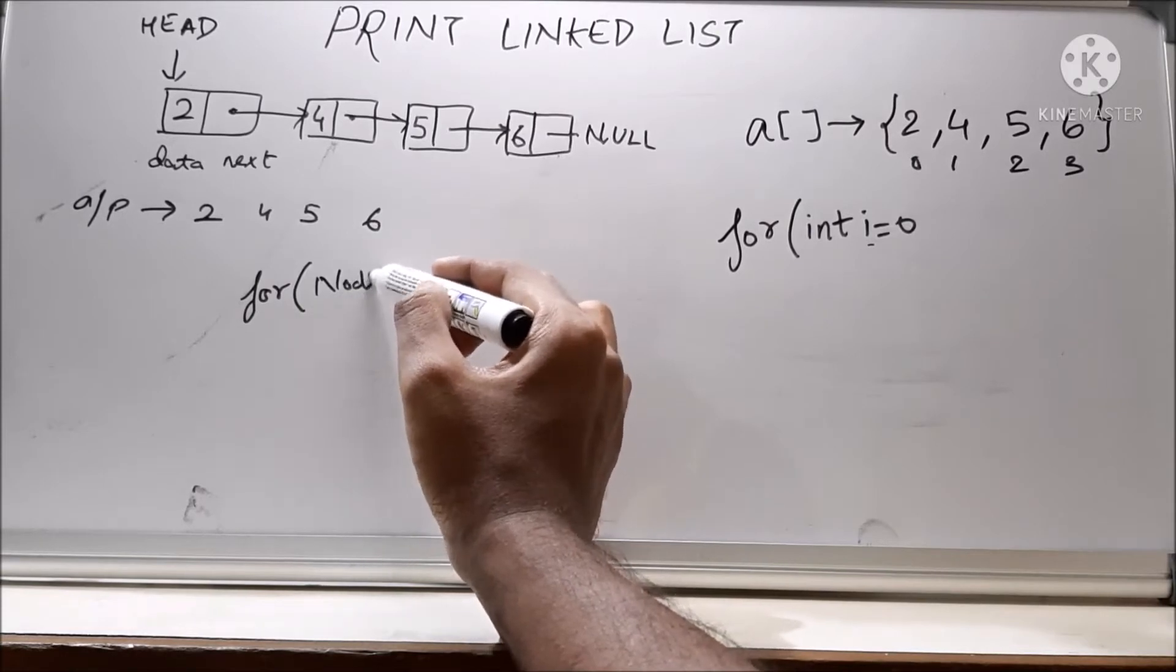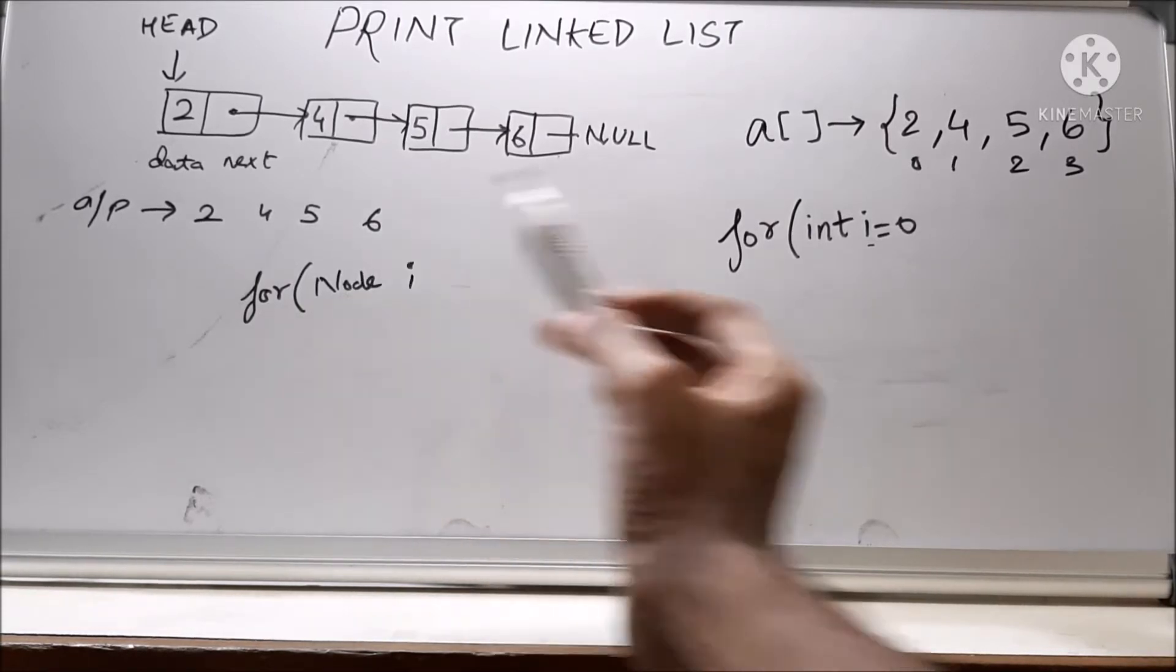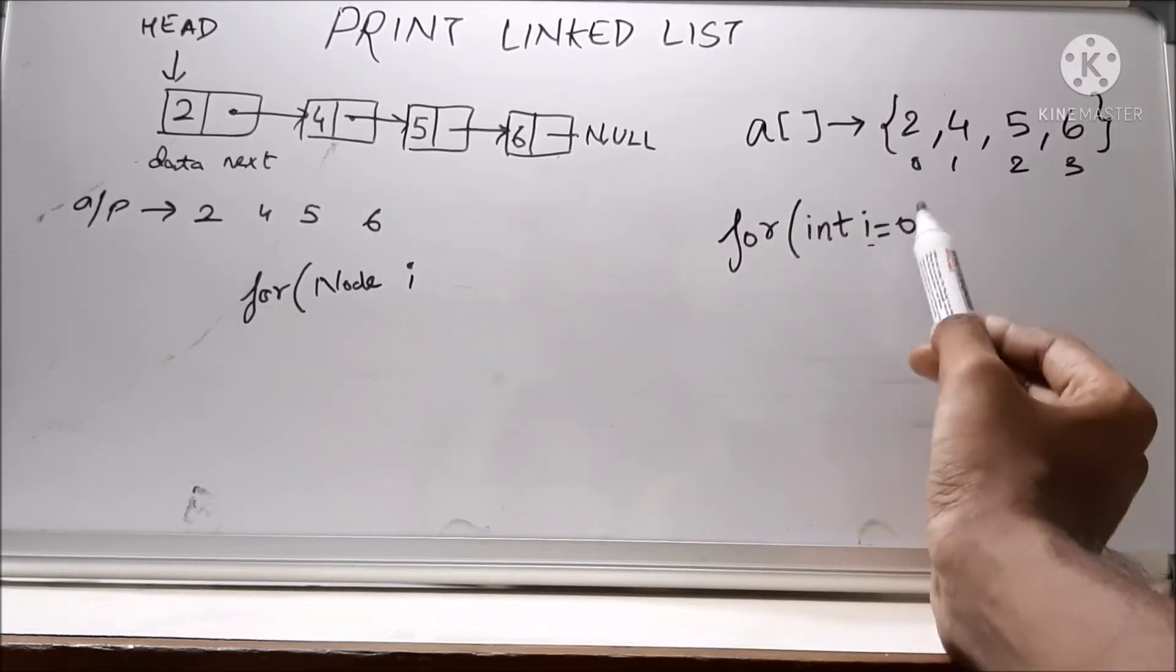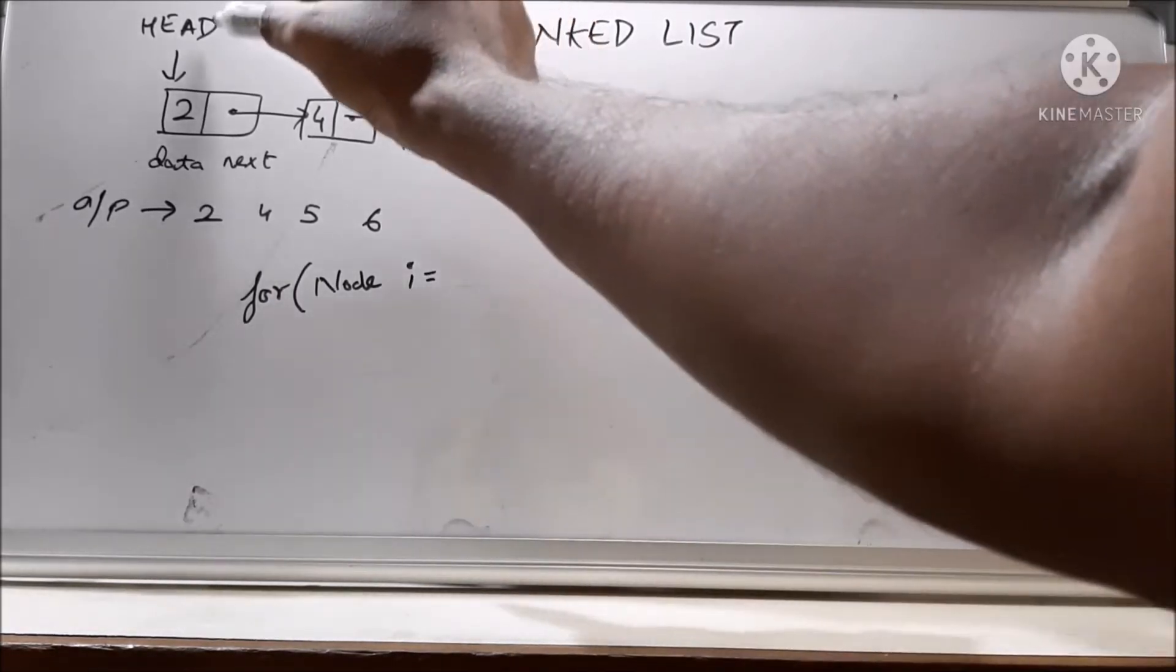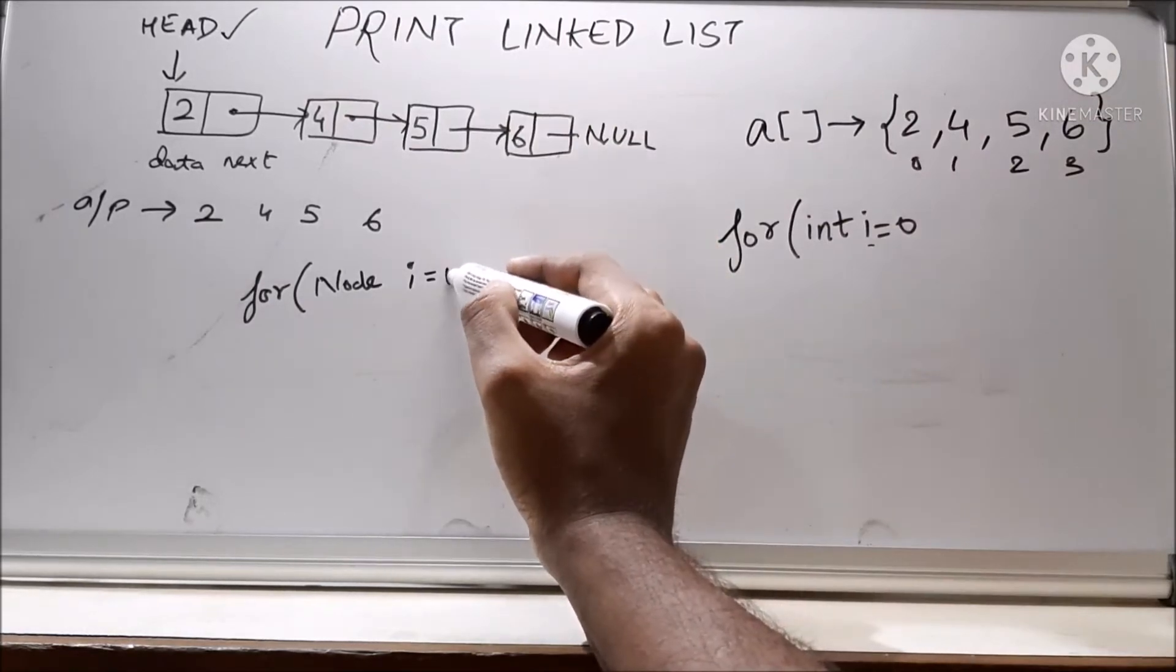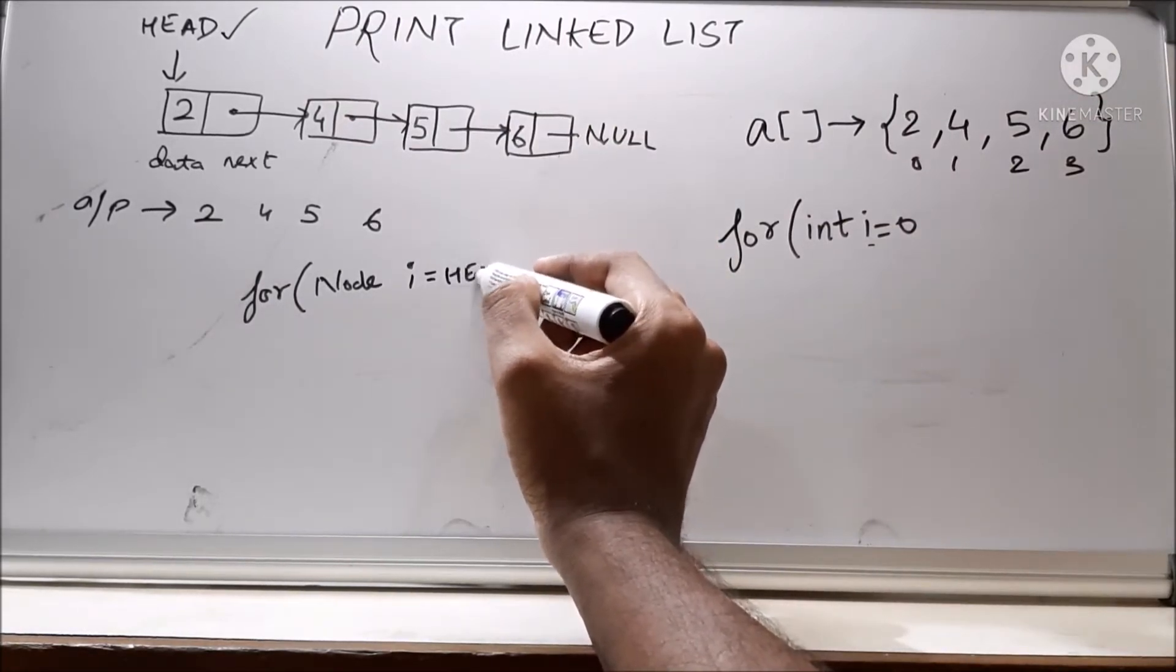And here we declare it as 0 because the first address is 0. Here the first address is head. So we will say head. I will start from head.